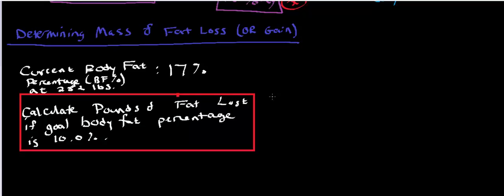In this case, we know the weight of the person — 252 pounds. We could go ahead and calculate the BMI from that, but suppose we didn't know the height, because to calculate BMI you need the height. If you know the body fat percentages you're going between — starting at 17% and wanting to go down to 10% — there's another method you can use where you don't actually have to know the person's height.